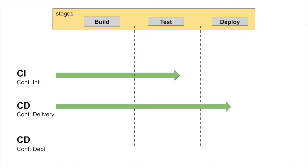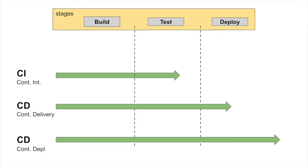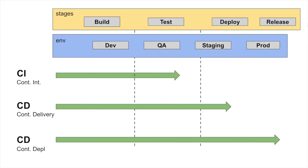Continuous Delivery includes the CI process and then we also deploy it on a pre-prod or staging environment, so the Continuous Delivery process expands until the deployment stage. Continuous Deployment adds deployment to the actual production environment. Including the environments: the CI process extends until the QA environment, Continuous Delivery extends until the pre-production or staging environment, and Continuous Deployment extends until the final production environment.